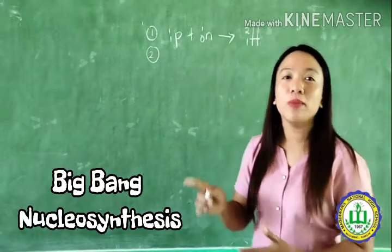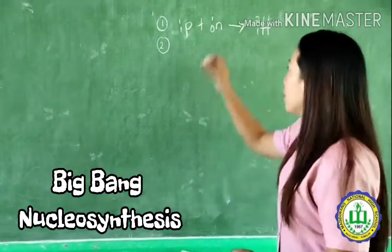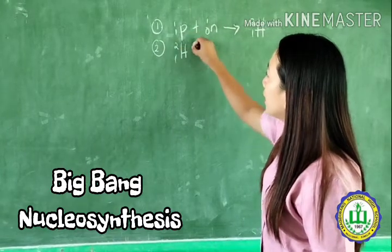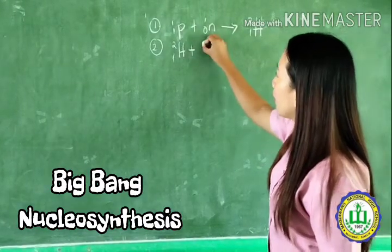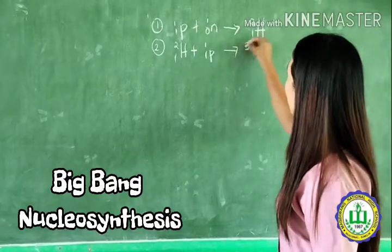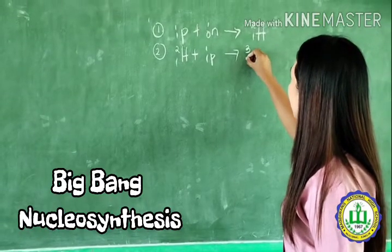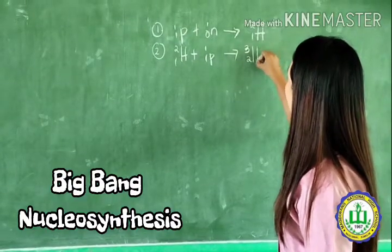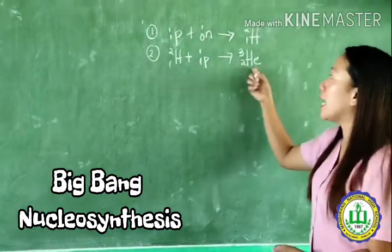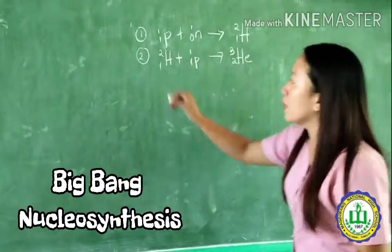Reaction two: deuterium collides with other protons, producing helium-3. Remember, helium always has an atomic number of 2.